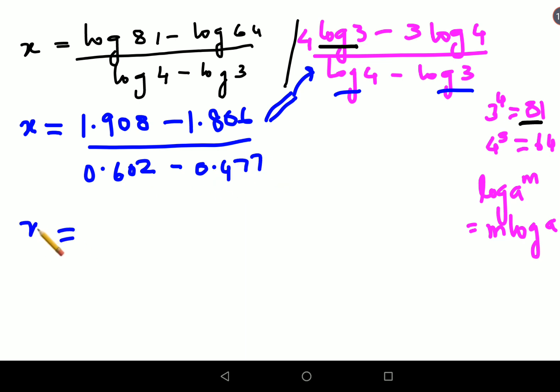So now the value of log 4 is 0.602 minus value of log 3 is 0.477. So when you do this subtraction you are left with in the numerator 0.1023 upon in the denominator 0.125.